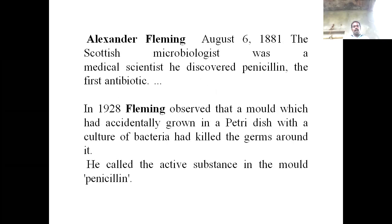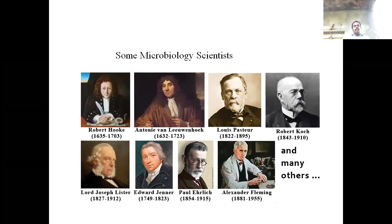Alexander Fleming was born August 6th, 1881, a Scottish microbiologist and medical scientist. He discovered penicillin, the first antibiotic, in 1928. Fleming observed that the mold which had originally grown in a petri dish inhibited bacterial growth. He called the active substance in the mold penicillin. He is one of the most celebrated microbiologist scientists.